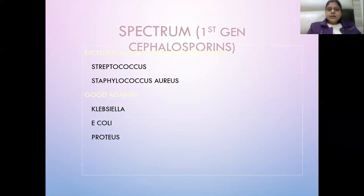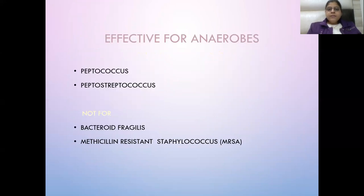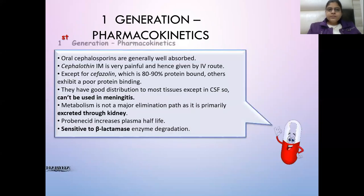First generation is excellent against gram-positive cocci and good against Klebsiella, E. coli, and Proteus. It is effective against Staph aureus, Streptococcus, anaerobic streptococci, E. coli, Klebsiella, and Proteus. Second generation is also effective against anaerobes including Peptococcus, Peptostreptococcus, and Bacteroides fragilis. First generation drugs are not effective against MRSA and Bacteroides fragilis.